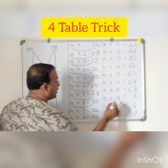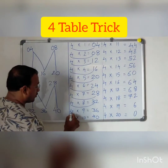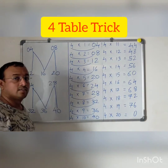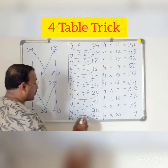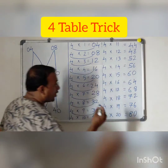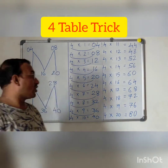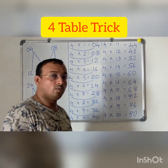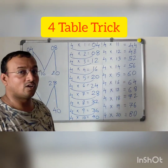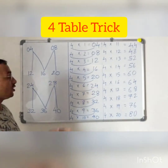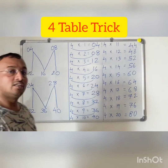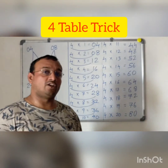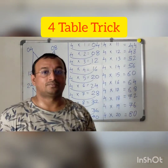4 plus 3 is 7. 4 plus 3 is 7: 4 nineteens are 76. And 4 plus 4 is 8: 4 twenties are 80. So this trick is useful in writing the last 10 steps of the 4 times table. As we discussed, we are going to write 20 steps of the 4 times table using these 2 tricks. Isn't it interesting friends? If you like, please subscribe and share. Thank you very much.